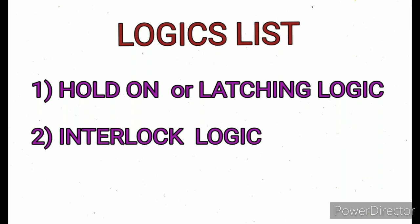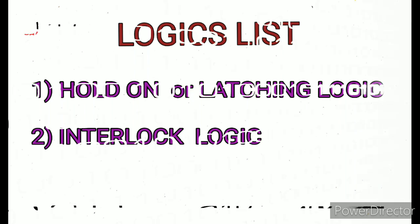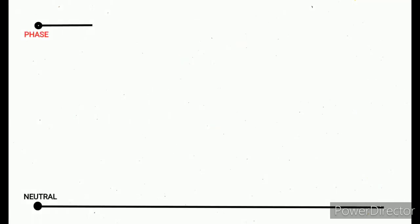So friends, let's start drawing. Initially we need to draw a source line supply line: phase and neutral. This phase and neutral coming from control CB or control fuses.